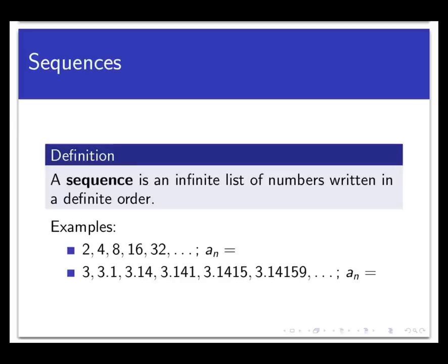In math, a sequence is just an infinite list of numbers that's written in order. So it's a very simple structure but can have some interesting properties. For example, look at this first example here: the sequence 2, 4, 8, 16, 32 and so on forever.